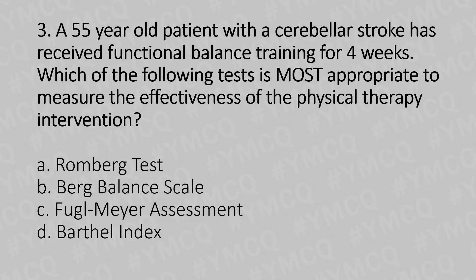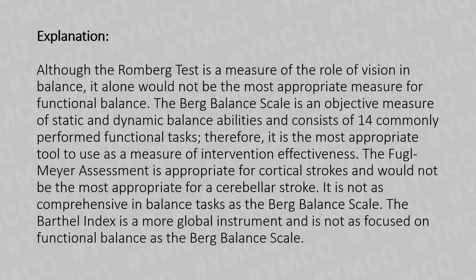And the answer is Option B: Burke balance scale. Explanation: Although the Romberg test is a measure of the role of vision in balance, it alone would not be the most appropriate measure for functional balance. The Burke balance scale is an objective measure of static and dynamic balance abilities and consists of 14 commonly performed functional tasks. Therefore, it is the most appropriate tool to measure the intervention effectiveness. The Fugl-Meyer assessment is appropriate for cortical stroke and would not be the most appropriate for cerebral stroke, and it is not as comprehensive in balance tasks as the Burke balance scale. The Barthel index is a more global instrument and is not as focused on functional balance as the Burke balance scale.